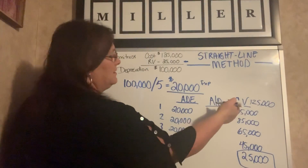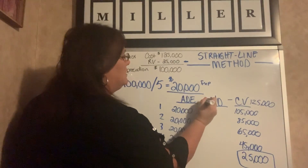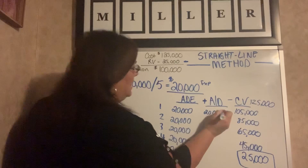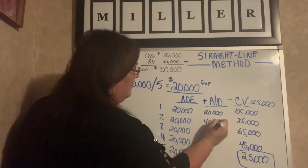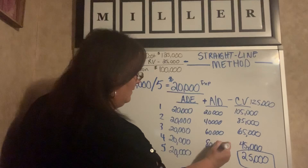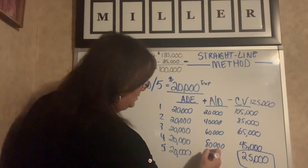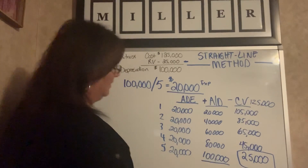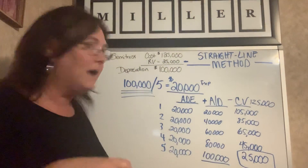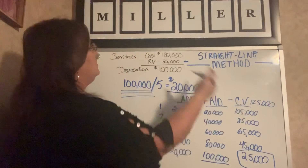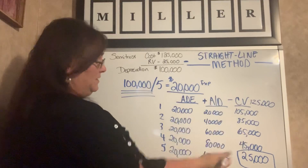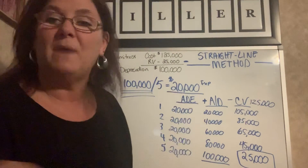For accumulated depreciation, this is just an add column. In year one we had $20,000. Year two: $20,000 plus $20,000 equals $40,000. Year three: $60,000. Year four: $80,000. And finally year five: $100,000. That's as hard as this is. That final accumulated depreciation number should come back to your depreciation amount — $100,000. Your carrying value should always go back to your residual or salvage value, and your accumulated depreciation should always equal the total depreciation amount. That is straight line. Look for my next video on the production method.